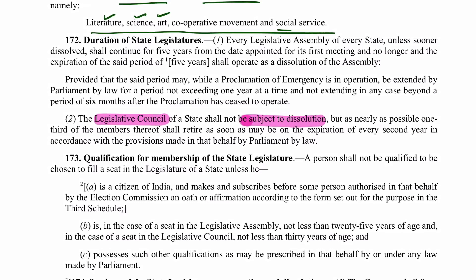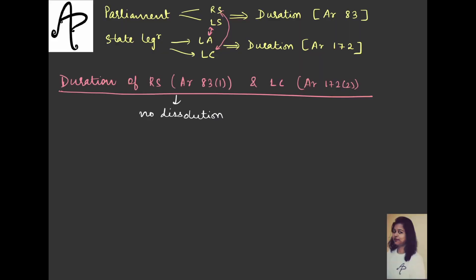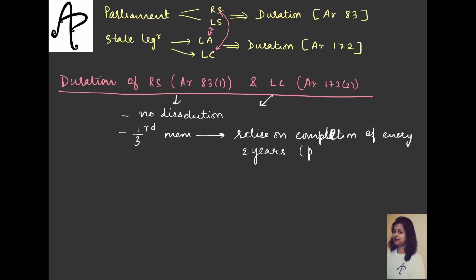For the state also, it is the same: as nearly as possible, one-third of the members shall retire on the expiration of every second year, in accordance with the provisions made by Parliament by law. So it is the same for both - no dissolution, and one-third members retire on completion of every two years, done in accordance with provisions made by Parliament by law.